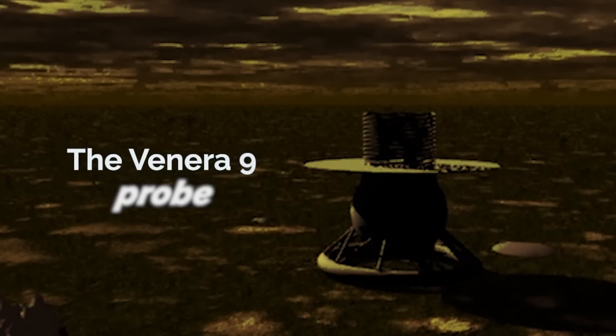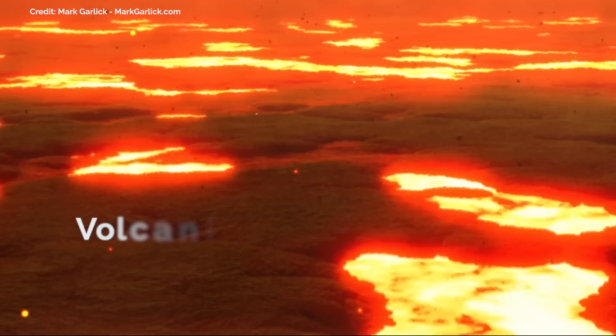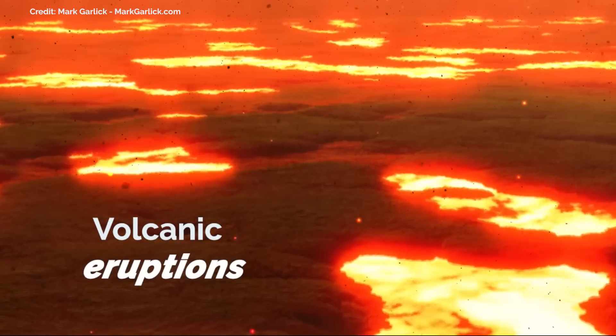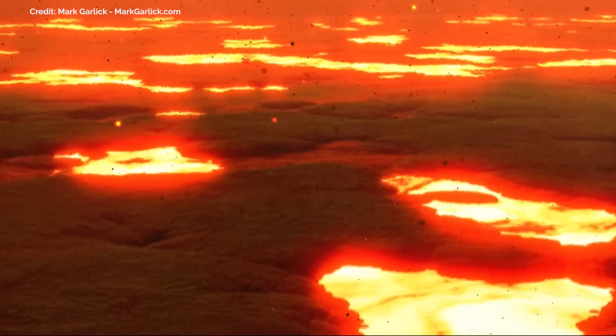Images of Venus taken by the Venera 9 probe shows that Venus's topography was entirely altered by volcanic eruptions that most likely filled lowland regions and possible ocean basins over the past billion years.